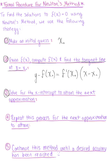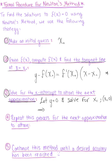Step 3: solve for the x-intercept to attain the next approximation. We let y = 0 and solve for x₁. As in our graphical interpretation, we plug in the ordered pair (x₁, 0) into the tangent line from step 2, and we obtain x₁ = x₀ − f(x₀) / f′(x₀). Then we continue this process to attain the next approximation.